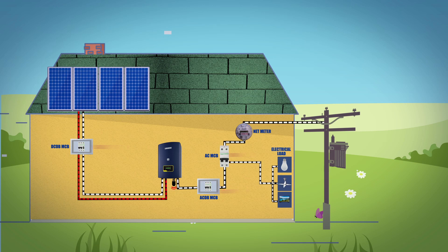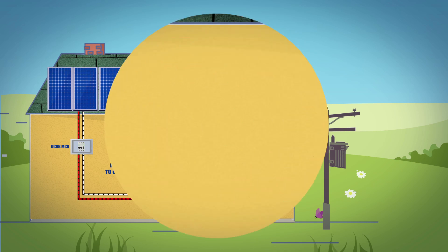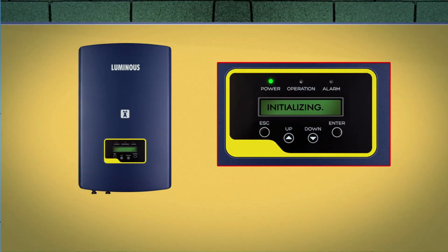Now, switch the DC MCB ON. Third, when both the DC and the AC grid sides supply to the inverter, it will be ready to generate power. At the same time, the green LED will flash and the LCD displays the information of initializing.